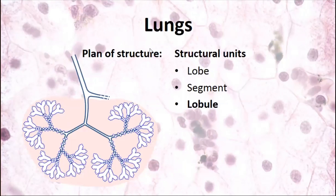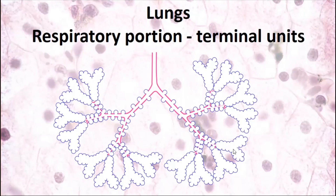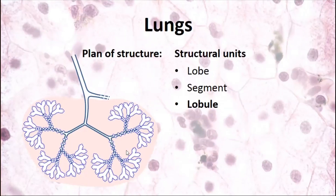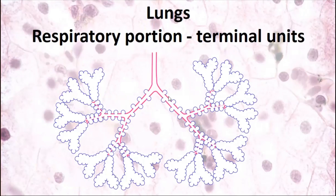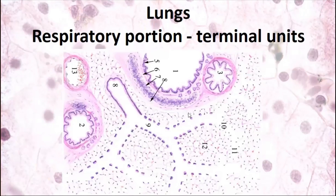Lungs also have parenchyma and stroma. Parenchyma is the epithelial structures forming bronchi and the walls of alveoli. Stroma is connective tissue filling the spaces between alveoli, forming septa between alveoli and neighboring lobules. Connective tissue is well developed between lobules, surrounding blood vessels, bronchi, and bronchioles, while very thin layers are present between parts of the respiratory portion.